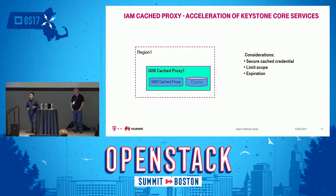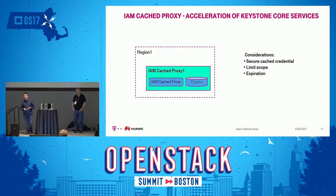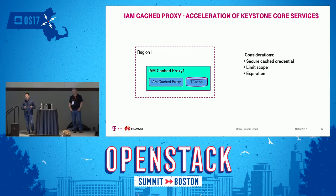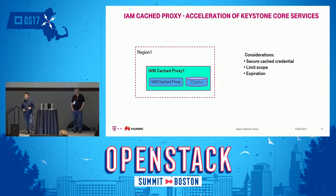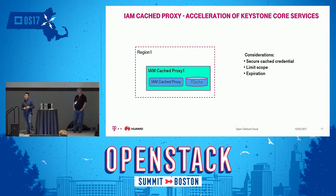Third consideration is expiration: each cached data has a timestamp, and when it reaches expiration the data is deleted automatically. We also have an effective and reliable mechanism to ensure data consistency between the cached proxy and the core Keystone service — we detect dirty data and delete it to keep things consistent.